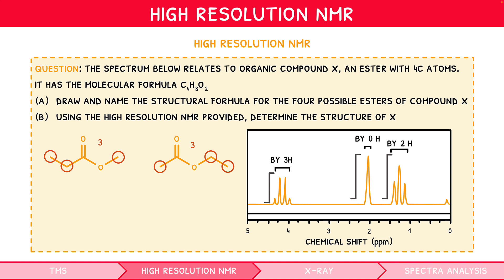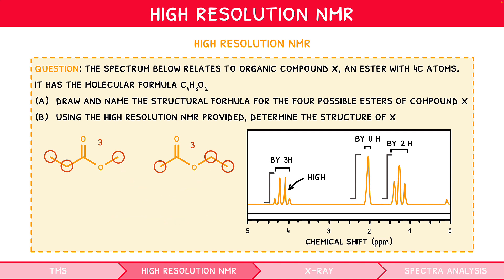So how do we differentiate? Well, you could go to the data booklet and start comparing shift values. However, remember our trick: a group near a single oxygen will be shifted higher. We can see the leftmost CH₂ peak is uncharacteristically high — we expect a terminal ethyl group to have a peak at 1 and 1.5 to 4, but it is over 4. Therefore, this CH₂ must be close to the oxygen atom. This occurs in ethyl ethanoate.